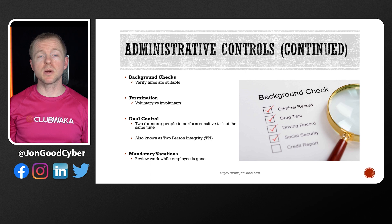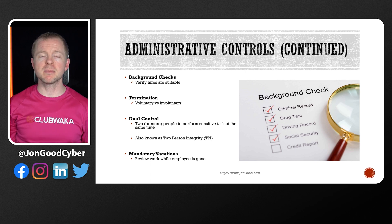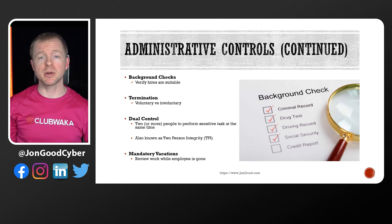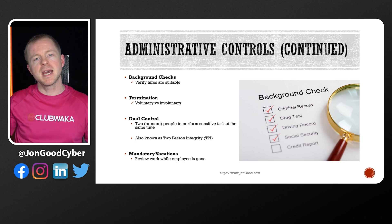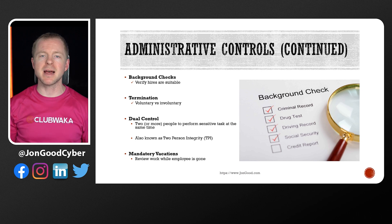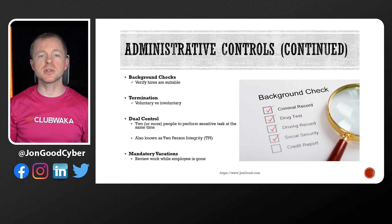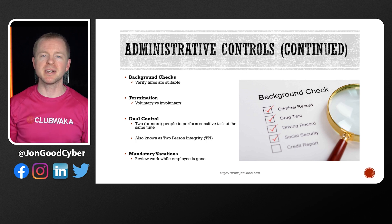Dual control is where at least two people are required at the same time to perform an extremely sensitive task. Some environments call this two-person integrity. One of the most common examples is in missile silos, where two people on opposite sides of the room have keys and they have to turn them at the exact same time to get the missiles to launch. Mandatory vacation forces people to take vacations and allows us to review their work and potentially identify malicious activity.